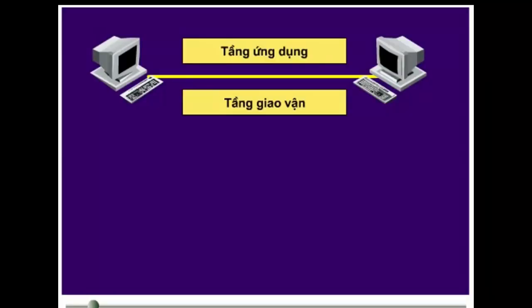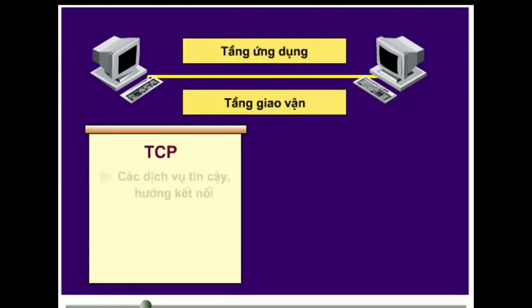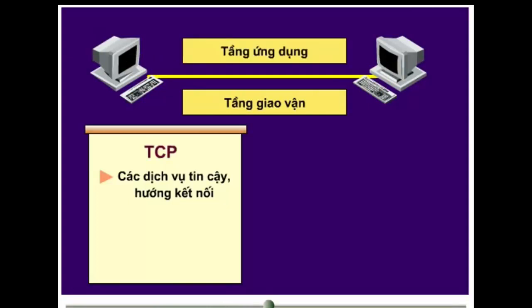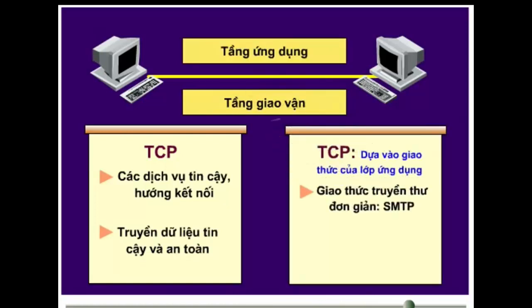Như bạn đã biết, TCP là một giao thức tầng giao vận. Nó cung cấp dịch vụ hướng kết nối và tin cậy. TCP được sử dụng trong trường hợp các giao thức ở tầng ứng dụng cần một kết nối tin cậy. Một số giao thức tiêu biểu thuộc tầng ứng dụng sử dụng TCP gồm Telnet, SMTP và FTP.